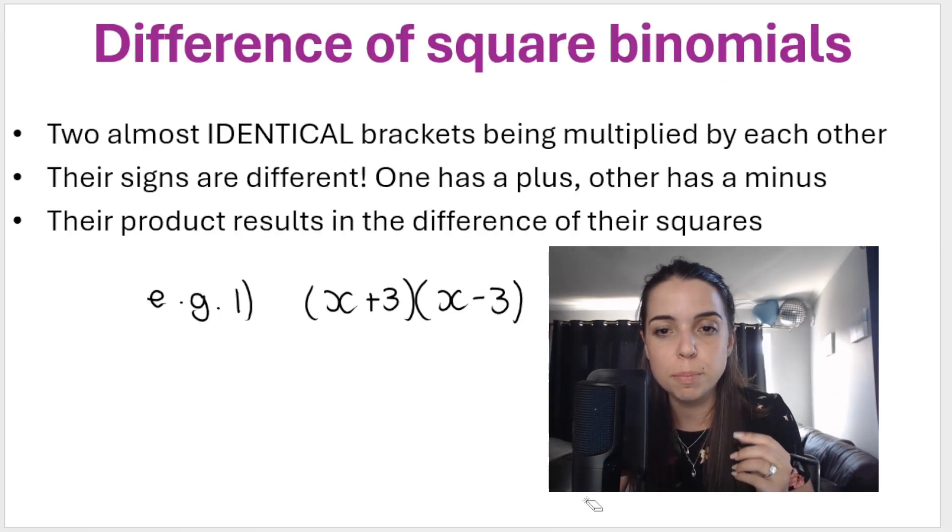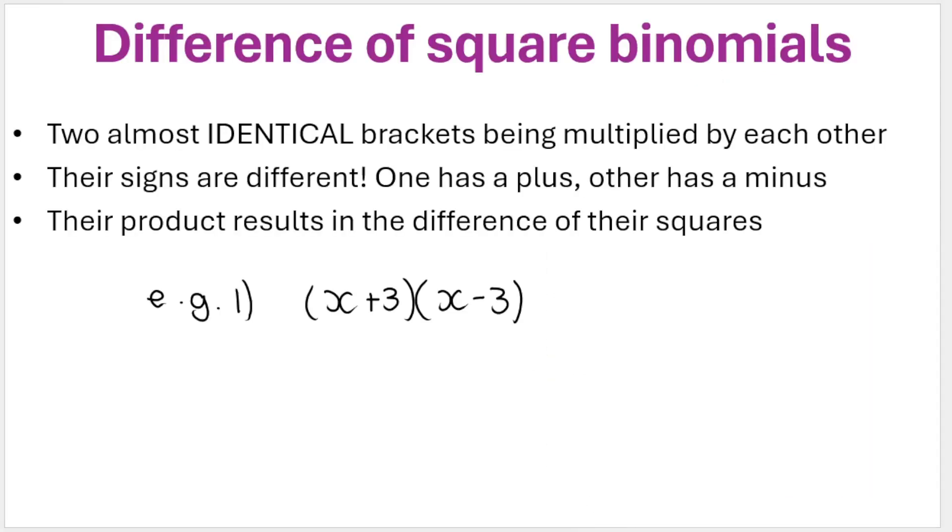So if I had to apply it to this very simple one that I did over here, you would square the first term, doesn't matter which bracket you choose. Square the first term, you get x squared. You square the last term, they're the same, so it doesn't matter which bracket you look at. Square the last term, three squared is nine. Put a minus in between. That's it.